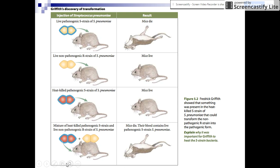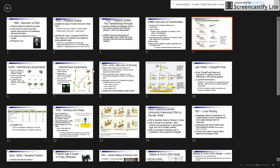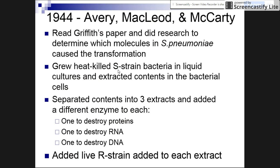That is Griffith and his transforming principle. Jumping ahead, we get to three scientists who took a look at his work and did additional research to determine what type of molecule is involved in this transformation. They grew the heat-killed S strain bacteria in liquid cultures, extracted the contents, and separated them into three different extracts. To each they added a different enzyme: one destroyed proteins, another destroyed RNA, and another destroyed DNA.